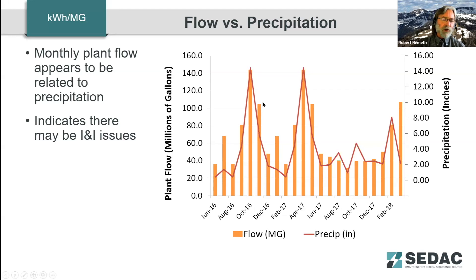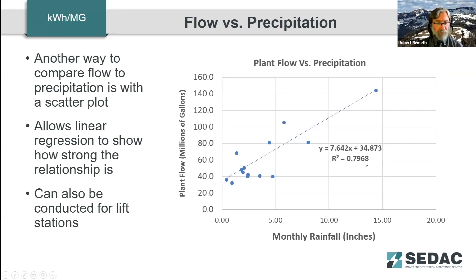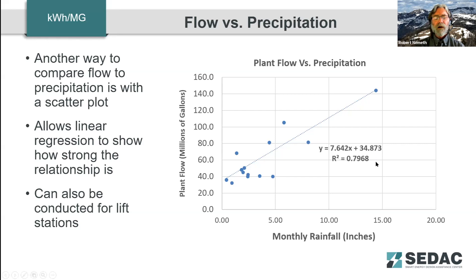We take the flow versus precipitation and chart that as well. Here we see a pretty strong correlation. On a scatter plot it's a 0.79 R-squared — call it 0.8. An R-squared of one is a line falling on top of the trend line, so 0.79 is a fairly decent relationship. That tells us there's definitely a relationship between how much rain falls and how much flow we're seeing in the plant. You could do something like this for lift stations too — compare energy consumption and rainfall for each lift station, and quickly identify which branch of your system is leaking more than others.